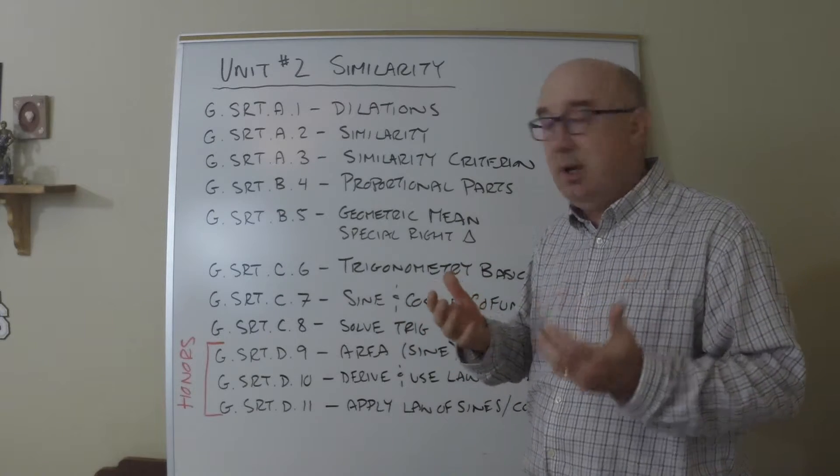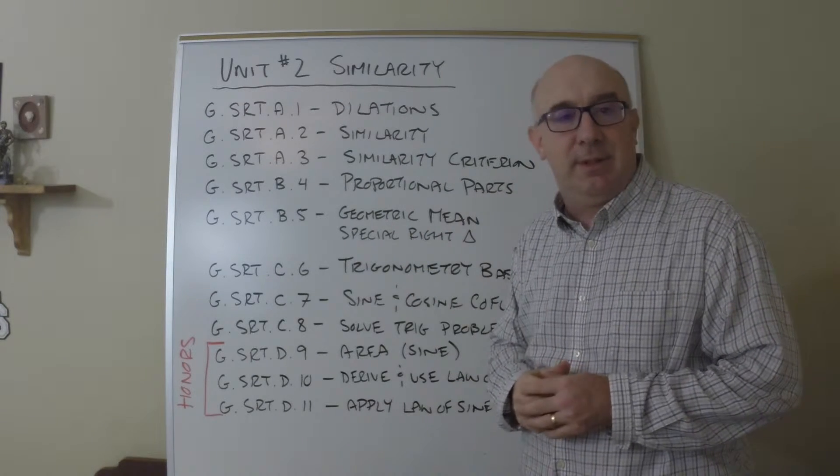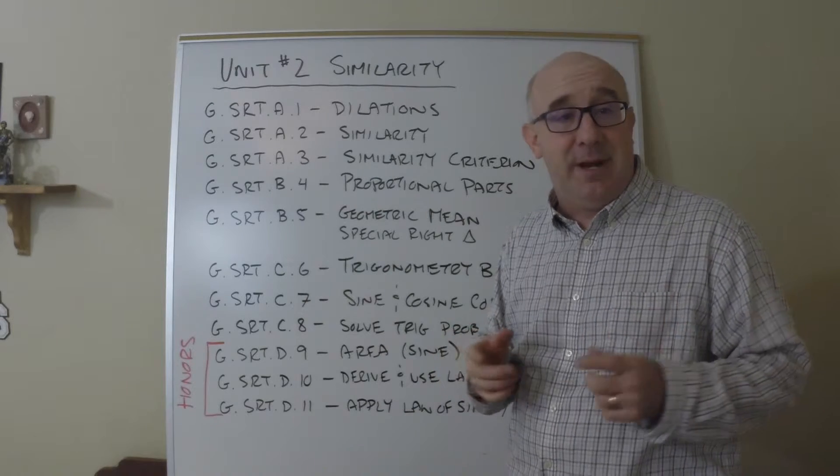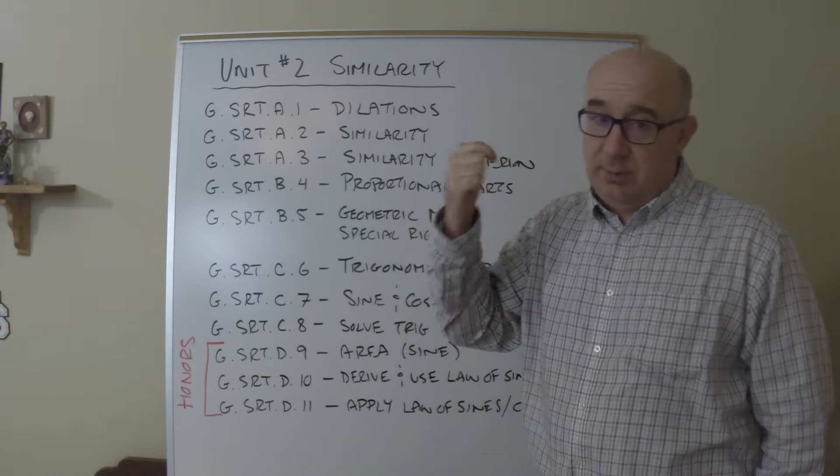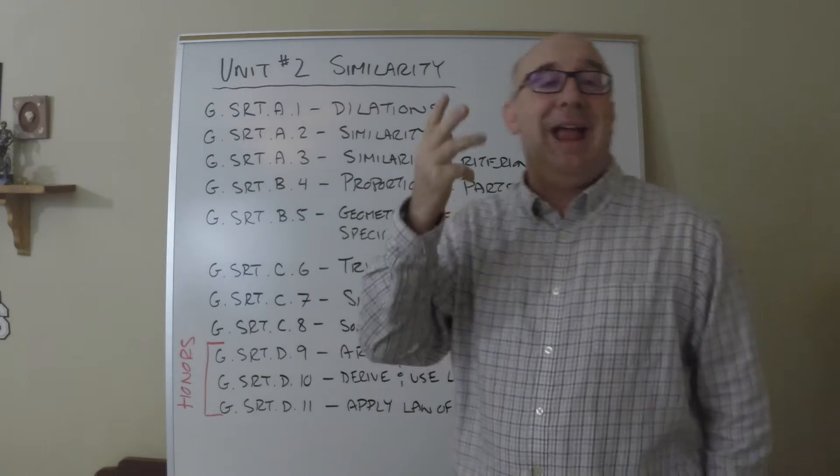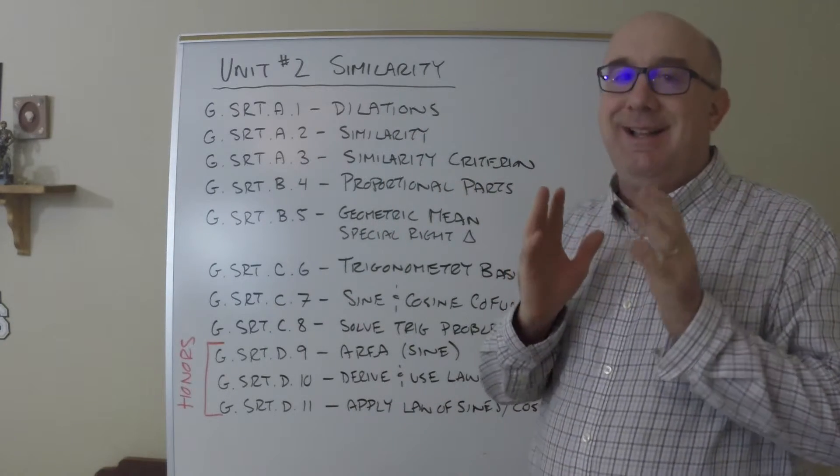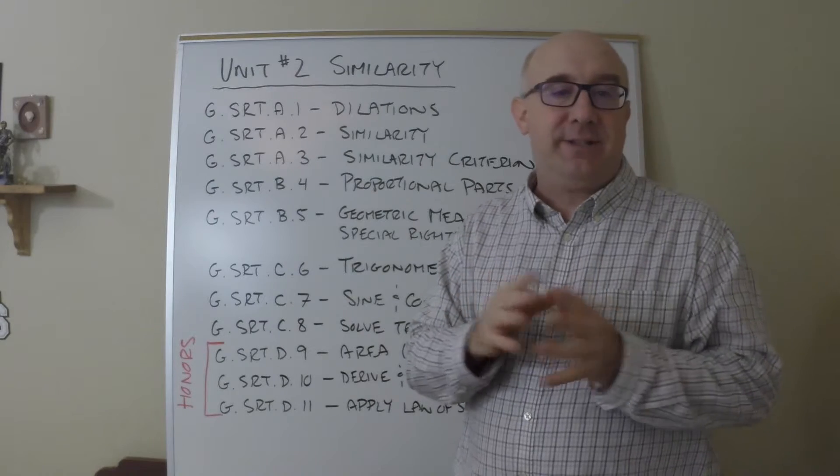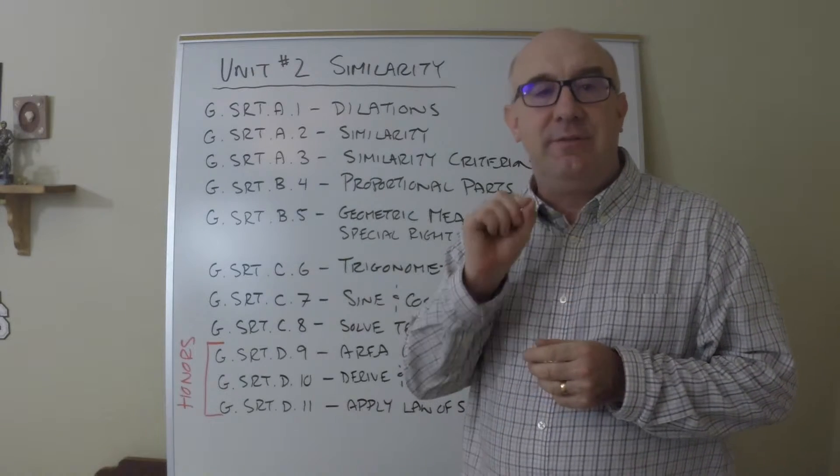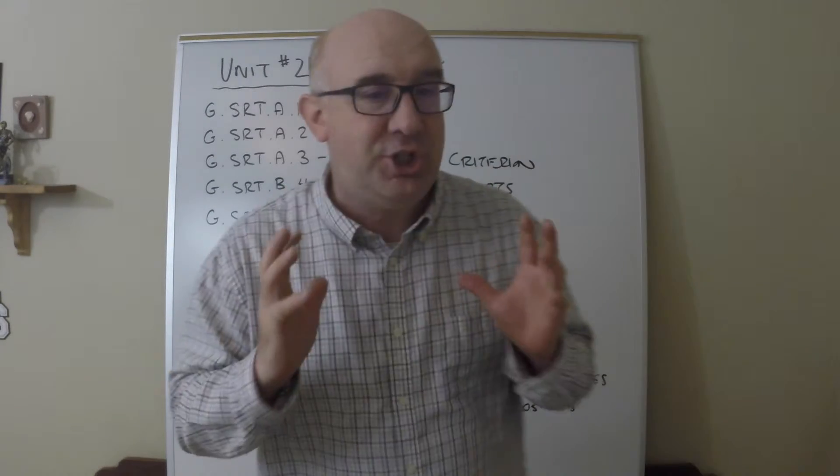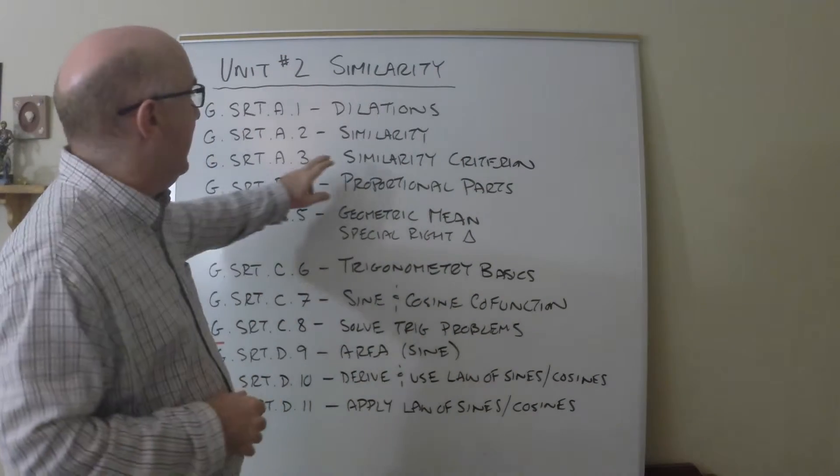We then move to similarity and similarity transformations, which are rotation, reflection, translation, and dilation. Notice all of those are similarity transformations—they preserve angles and preserve shape.